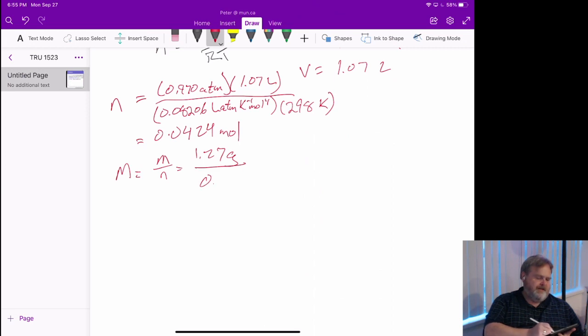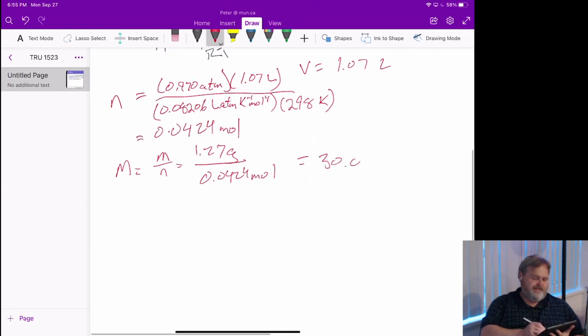And we divide that by the 0.0424 moles. And all of a sudden, our unknown gas has to have a molar mass of 30.0 grams per mole.